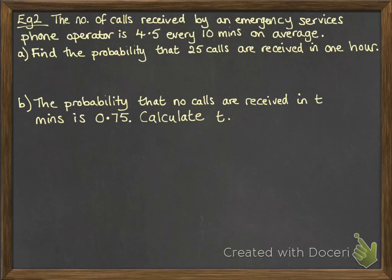Example number 2. We're looking at the number of calls received by an emergency services operator. He receives 4.5 calls every 10 minutes on average. So we want to find the probability that 25 calls are received in one hour.